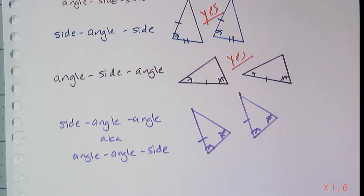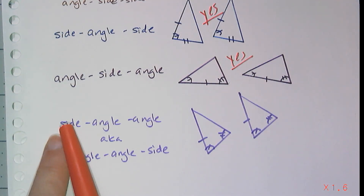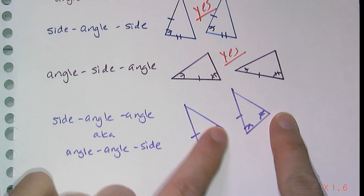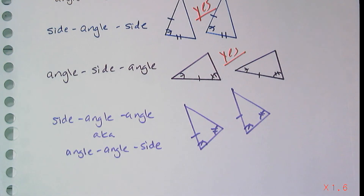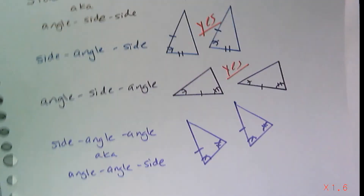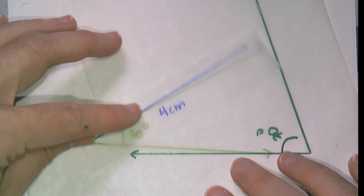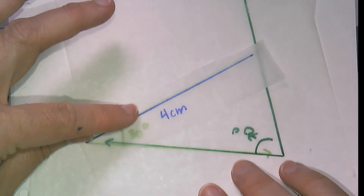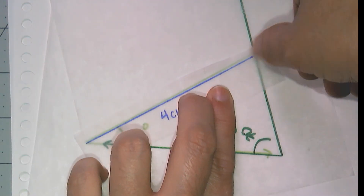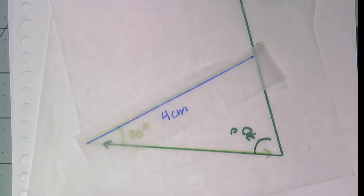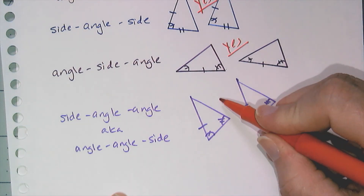I have one more combination to check: two angles and a non-included side, which is side-angle-angle or angle-angle-side. Going around the triangle I encounter side-angle-angle. Again, that endpoint is going to hit the other side of the angle at a unique spot. So angle-angle-side, or side-angle-angle, absolutely is a triangle congruency — this is also a yes.